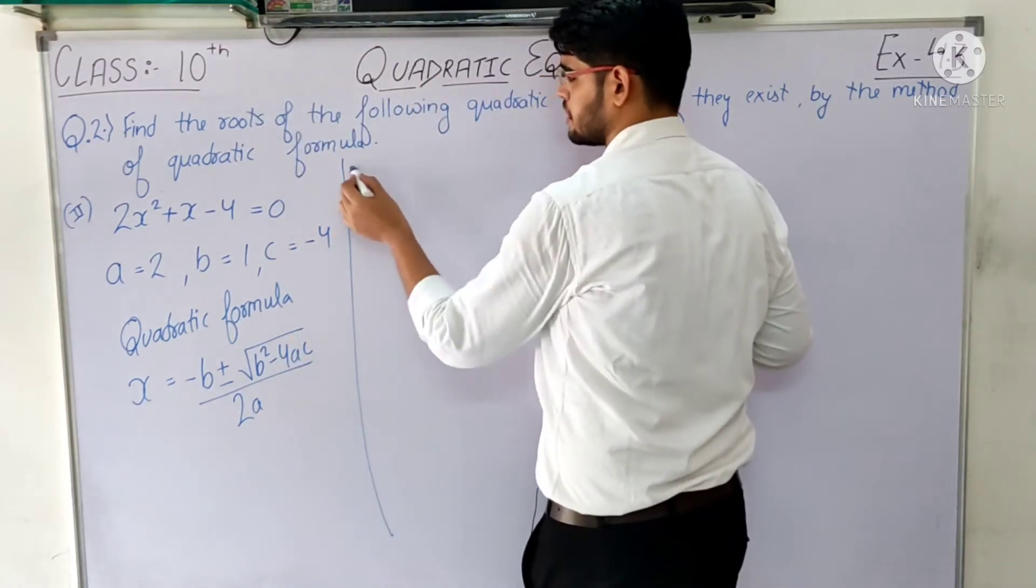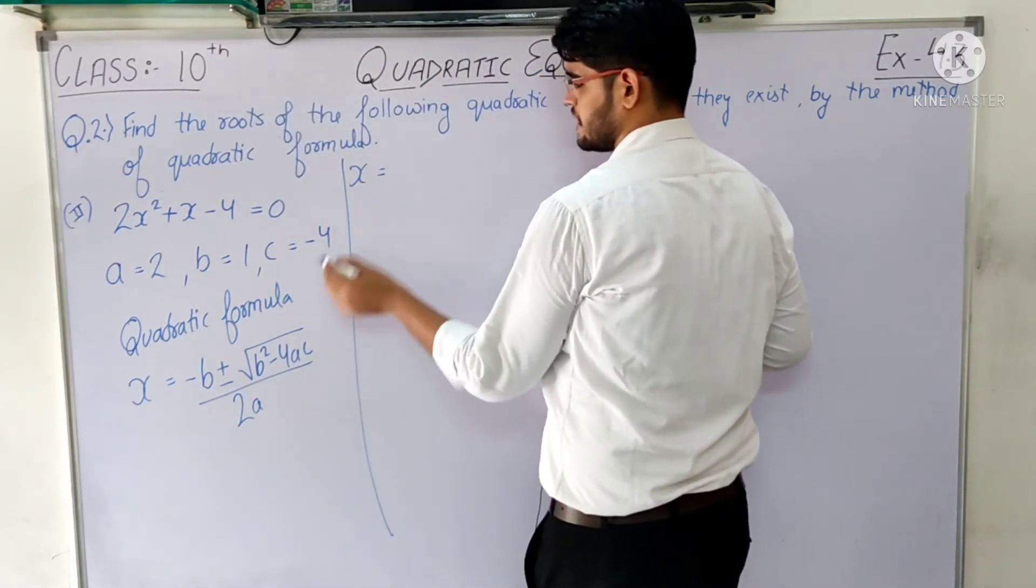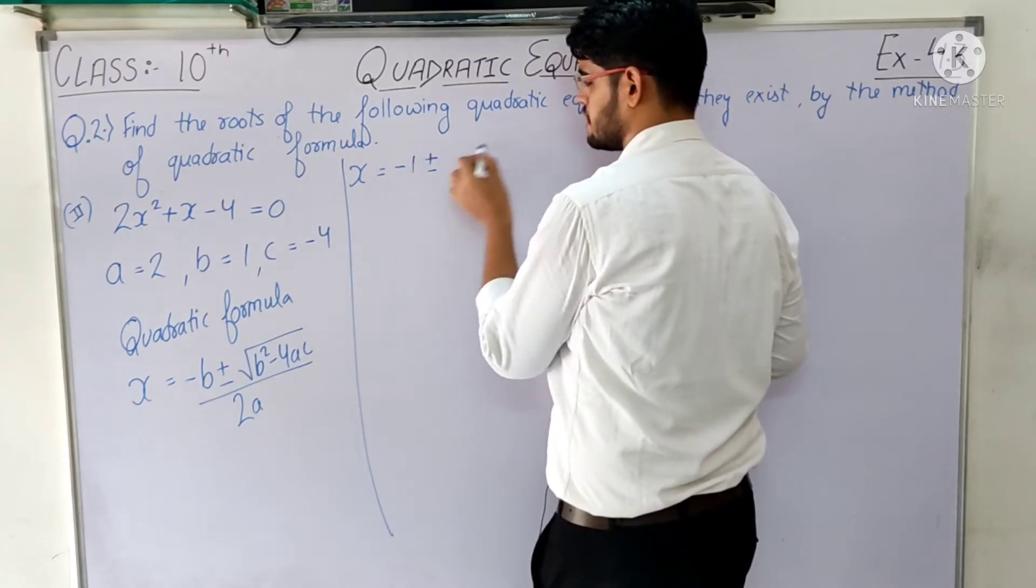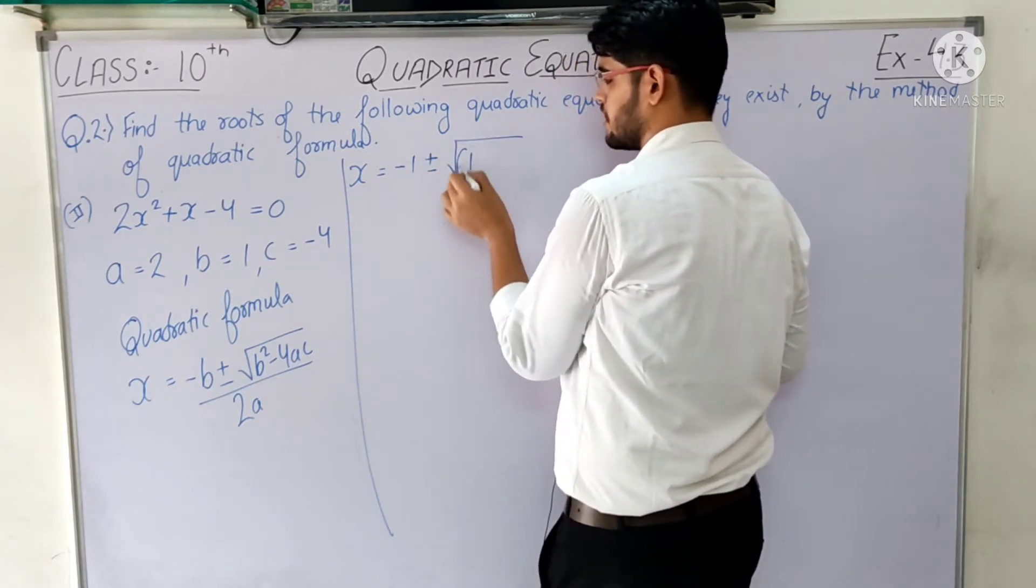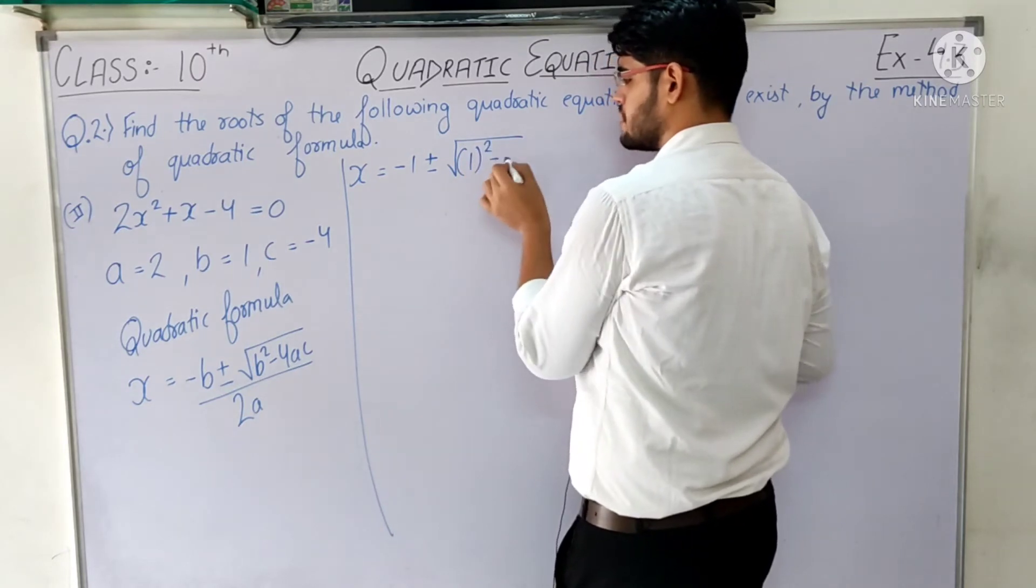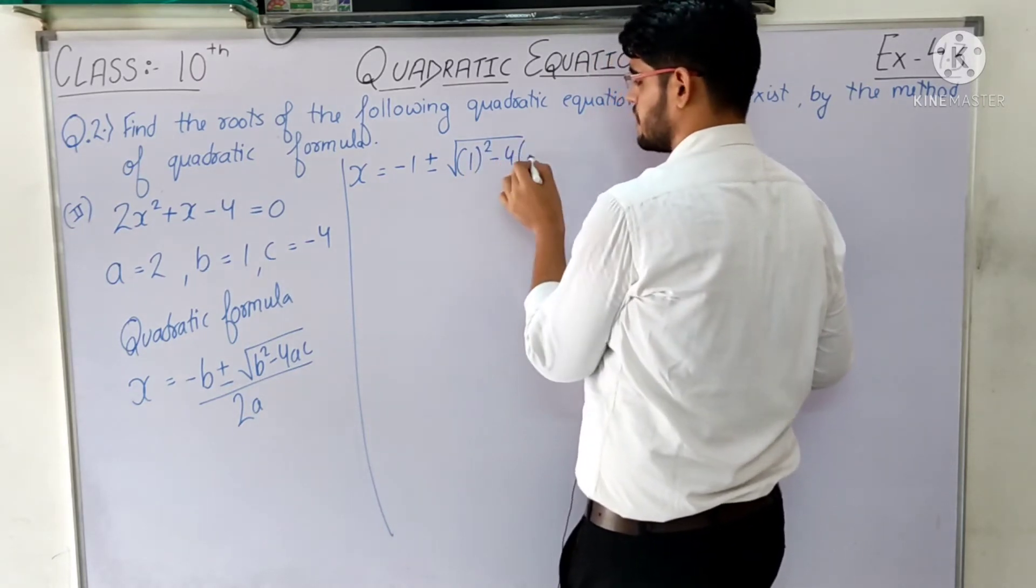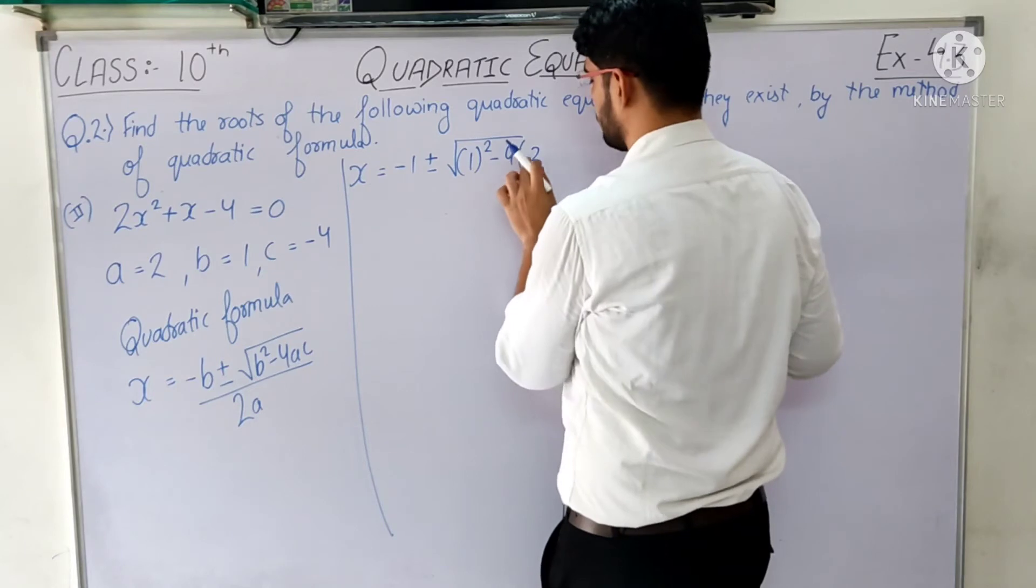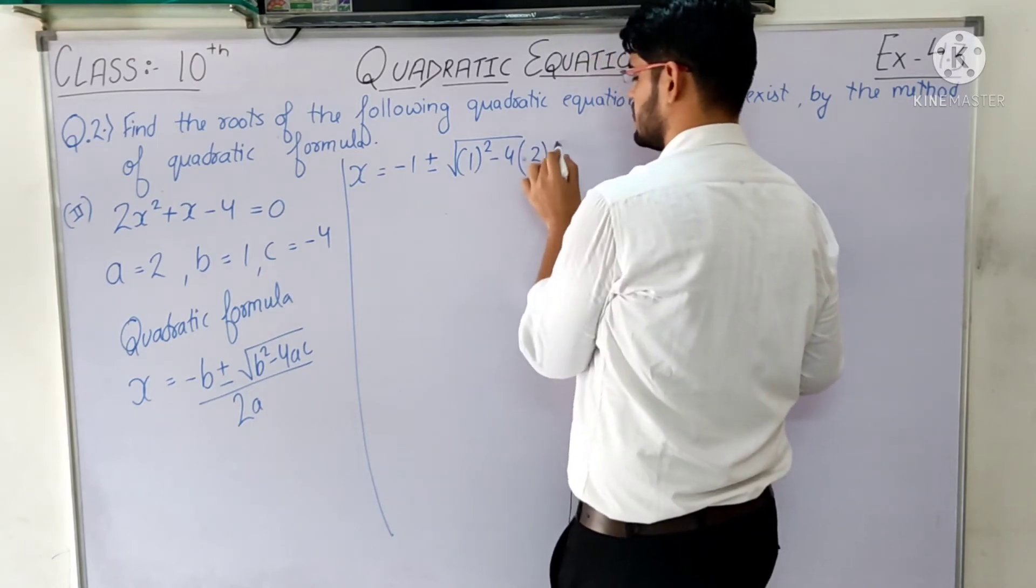Now we substitute the values. x = -b, so -1, plus minus under root b² (that is 1²) minus 4ac, so 4 times a value is 2, and c is -4.